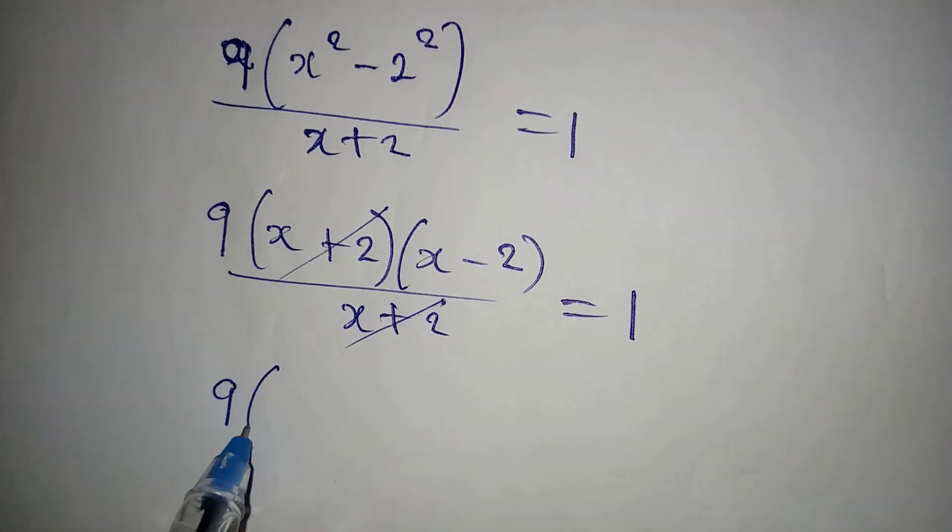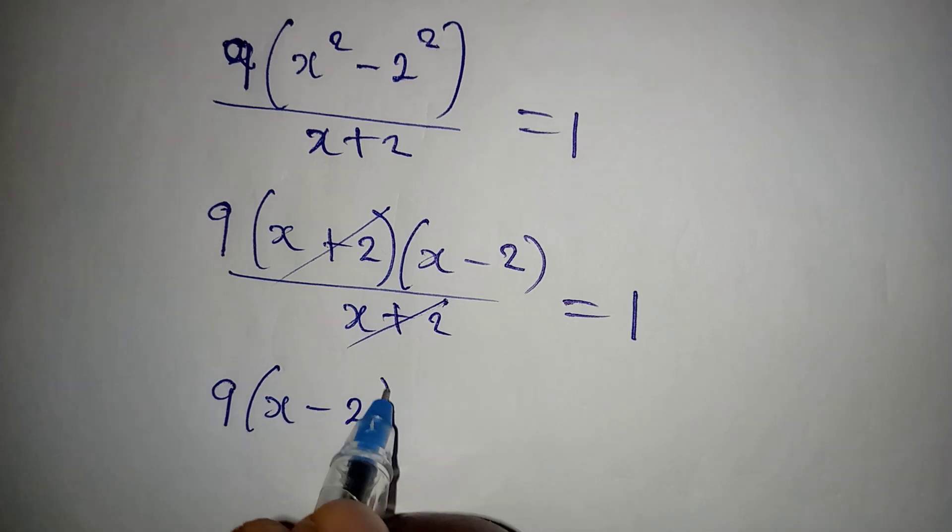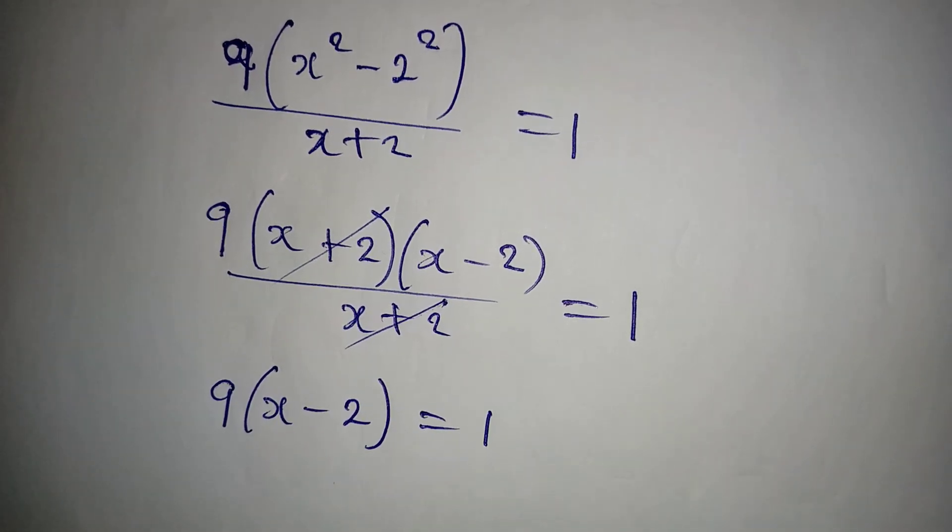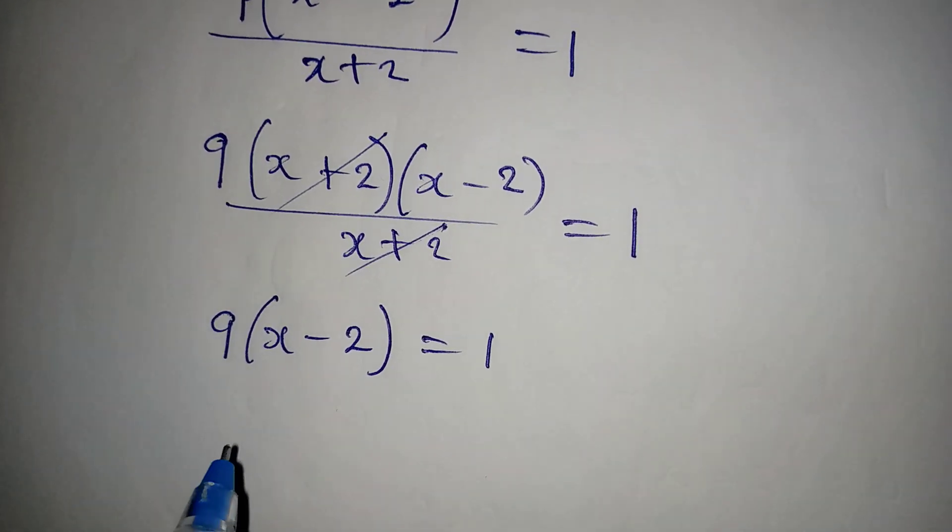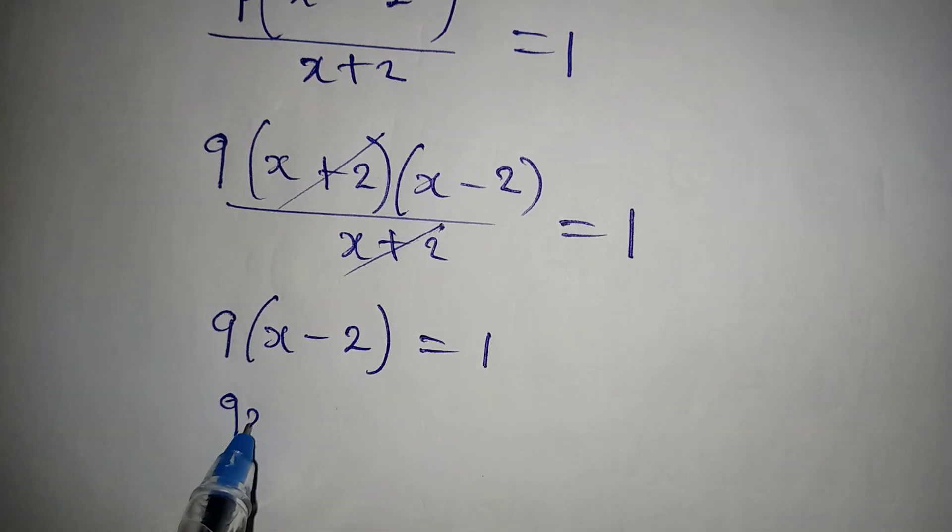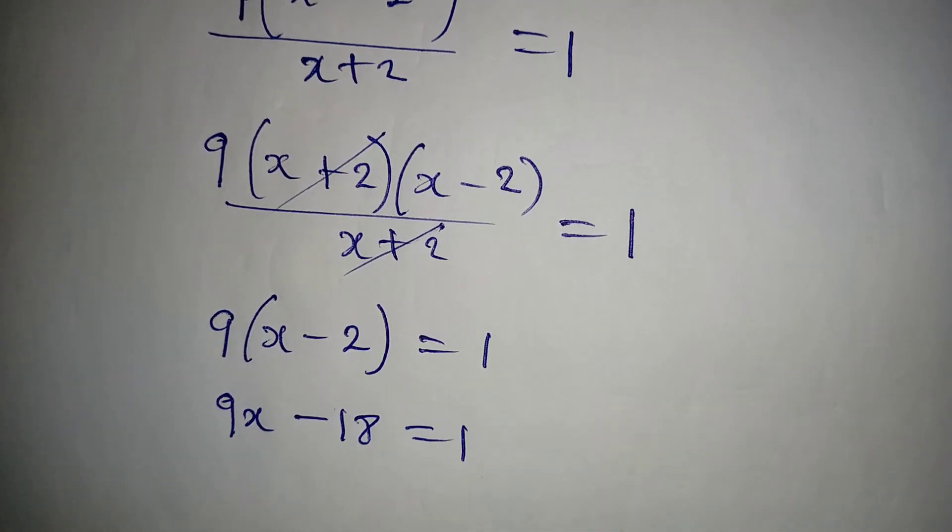So we have 9 times x minus 2 equal to 1. Open the bracket: 9x minus 18 equals 1.